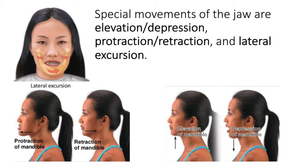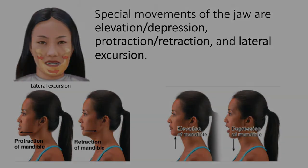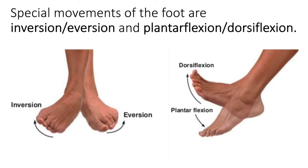Special movements of the jaw include elevation and depression. Bringing your jaw down to open your mouth is depression, and returning your jaw back to standard anatomical position — closing your mouth — is elevation. You can also stick your jaw out anteriorly, which is called protraction, and returning it back is called retraction. Moving your jaw side to side is called lateral excursion — either right lateral excursion or left lateral excursion.